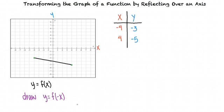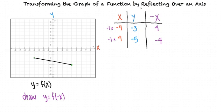Now we're asked to draw the graph y equals f of negative x. Since the negative sign is right next to the x in our new function, we have to multiply every x coordinate in every point of the original function by negative 1. Our y coordinates will stay the same, so we can draw our new graph from the new points. This looks like the same old graph, just flipped on the other side of the y-axis, kind of like a mirrored image.